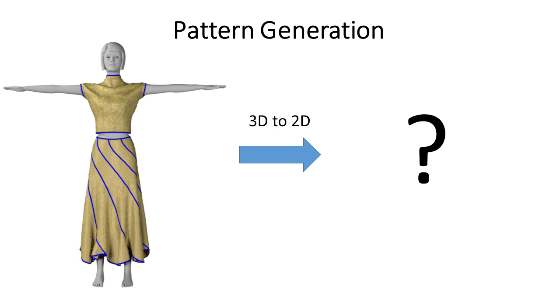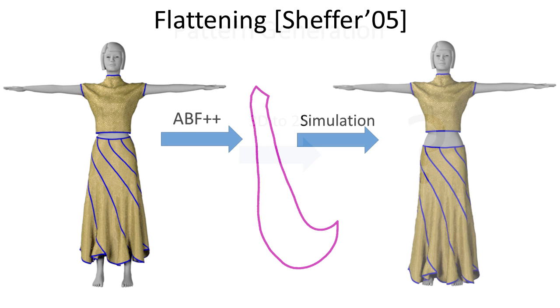While our 3D editor produces garments with desirable shapes, using them for simulation or manufacturing requires patterns. Simply unfolding the garments along seams using standard parameterization, as done by previous 3D editing or modeling methods, ignores physical forces.